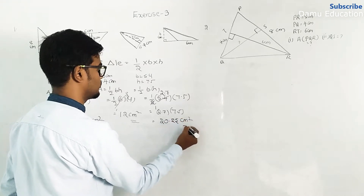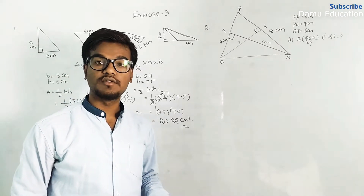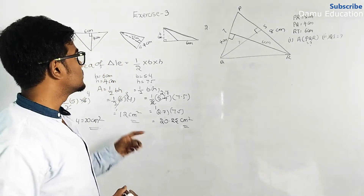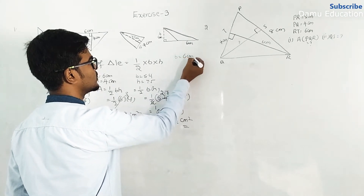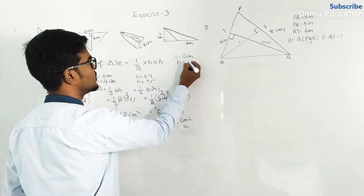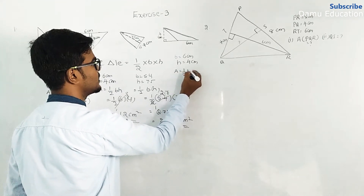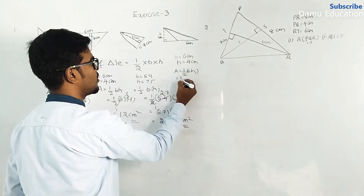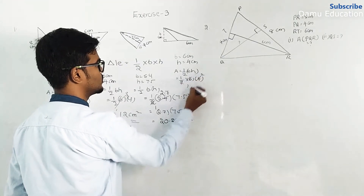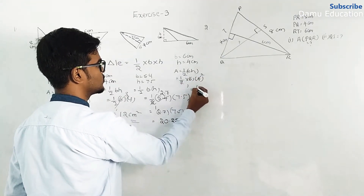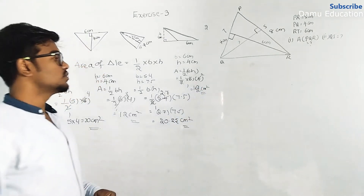For the fourth triangle, base is equal to 6 centimeters and height is equal to 4 centimeters. Area equals half into base into height, half into 6 into 4, which gives 12 centimeters square.